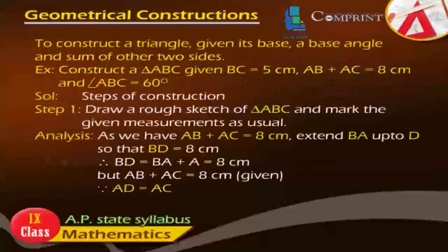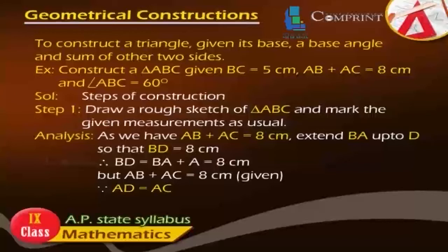To construct a triangle given its base, a base angle, and the sum of the other two sides. Example: Construct a triangle ABC given BC = 5 cm, AB + AC = 8 cm, and angle ABC = 60 degrees.